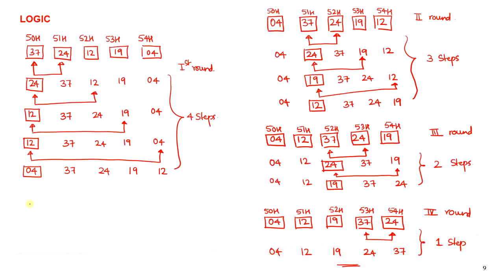In the program, memory location 30H will store the array size minus 1, which will be moved to register R4. Since the array size is 5, that value is 5 minus 1 = 04. For any array size, you specify the number of iterations required to complete the process. In our case, we require a total of 4 rounds because the array size is 5, so R4 = array_size minus 1 = 04.